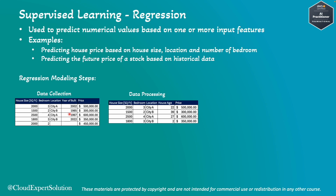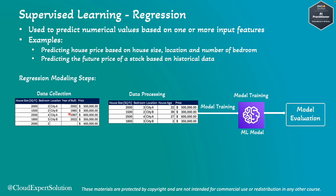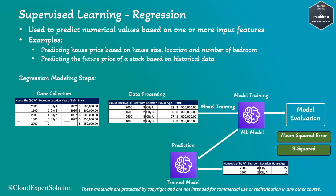Part of data processing is preparing the data for model training. The next step is model training, where we use the training dataset to train the machine learning model. During training, the model learns the relationship between the input parameters and the outcome — in our example, the house price. Post model training, we perform model evaluation to assess performance using metrics like mean squared error or R-squared, which help us understand the difference between predicted and actual values. Once we confirm a good model, the final step is prediction, where we use the trained model to predict outcomes for new data.